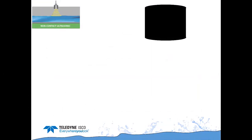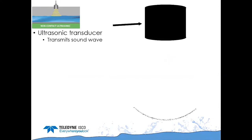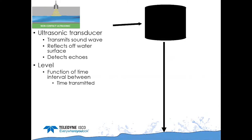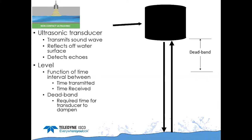An ultrasonic sensor is a non-contact sensor mounted above the flow stream. It transmits a sound wave which reflects off the water surface and detects the echo. The time it takes to transmit and receive the signal determines the distance to the water surface, which is calculated into a level. All ultrasonic sensors have a deadband — the time the transducer needs to transmit and then receive — ranging commonly from two inches up to two feet.